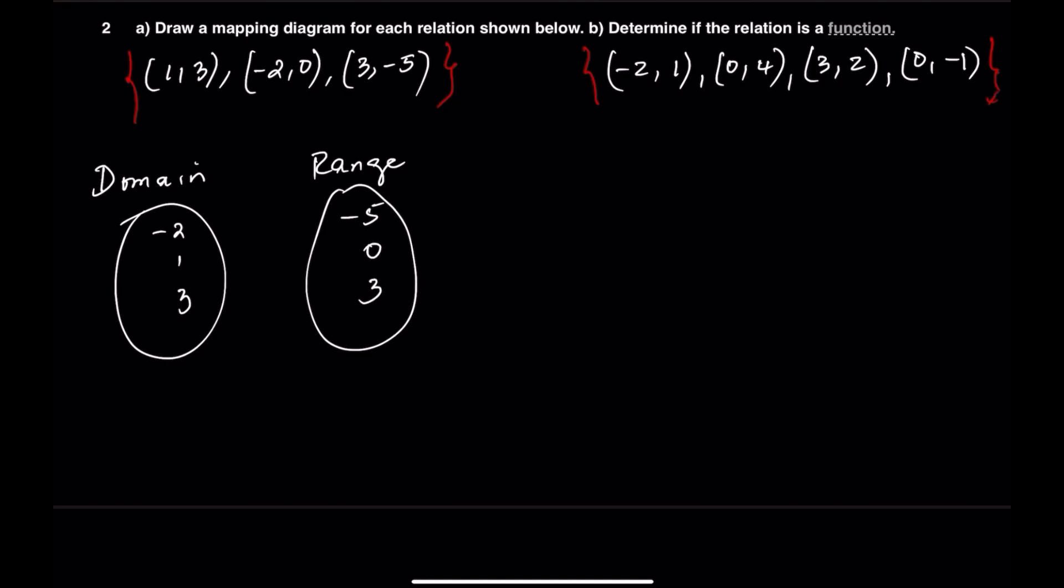In this relation, negative 2 is paired with 0, 1 is paired with 3, and 3 is paired with negative 5. Each input matches with exactly one output. Since no input is repeated with a different output, we can say that this is a function.